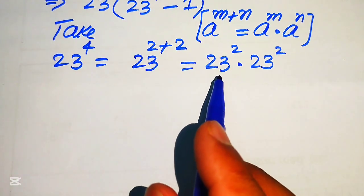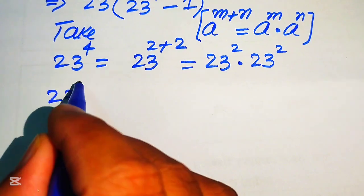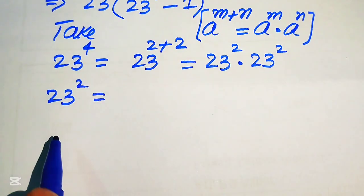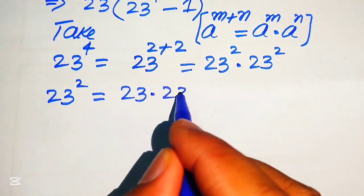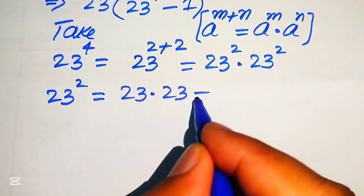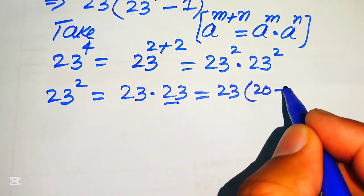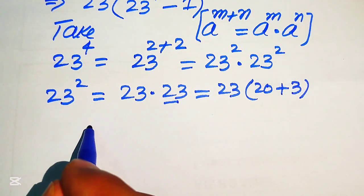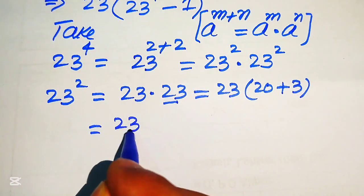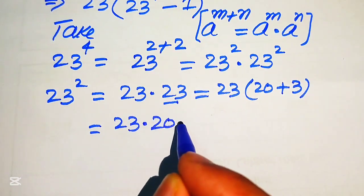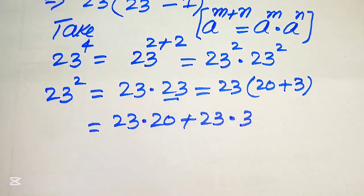Now we need to find the value of 23 squared, which means we multiply 23 by 23. We break 23 as 20 plus 3, and multiply 23 on both values, giving us 23 multiplied by 20, plus 23 multiplied by 3.